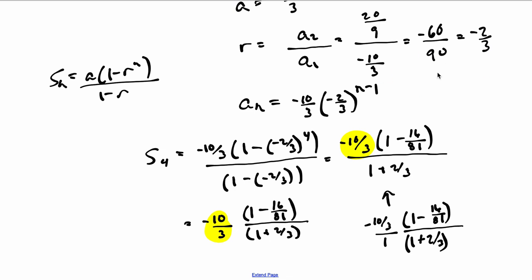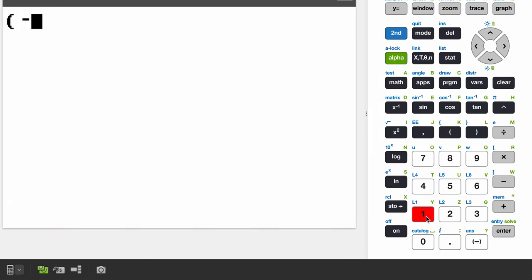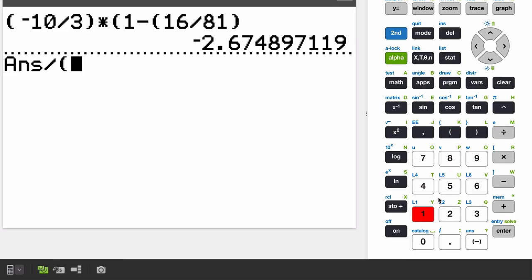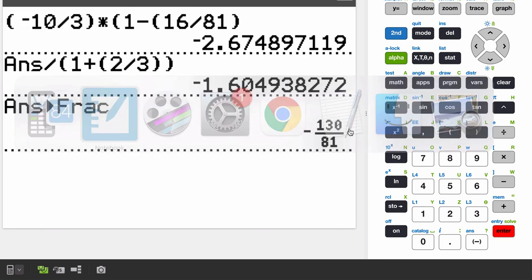Let's evaluate both of them so that we're super clear on this. Let's do the top one first. I have negative 10 over 3 times 1 minus 16 over 81, that's my numerator. Then I'm dividing that by something: 1 plus 2 thirds. So parentheses 1 plus 2 over 3. And we get this number here, hitting math and fraction. So we should get negative 130 over 81. That's what we're getting here.